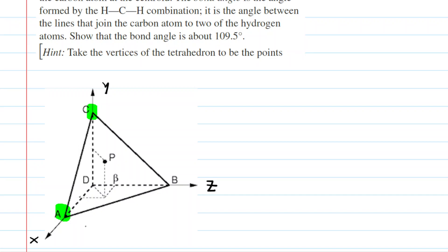If we look at point A, we can see that the coordinates of point A would be one unit along the x-axis, zero units up the y-axis, and zero units along the z-axis. Then if you go over to point C, we have zero units along the x-axis, one unit up the y-axis, and zero units along the z-axis.